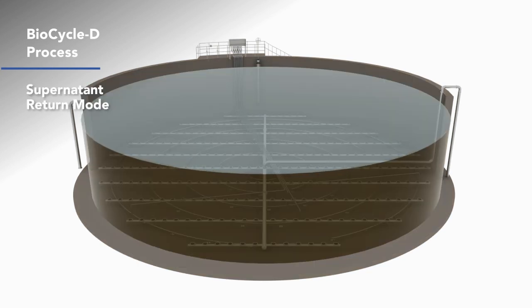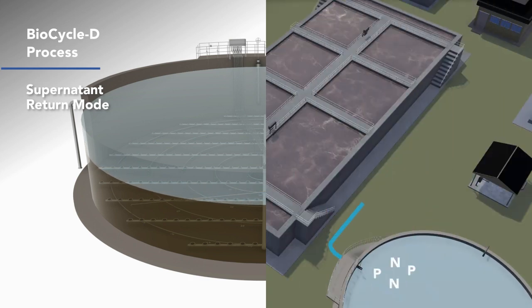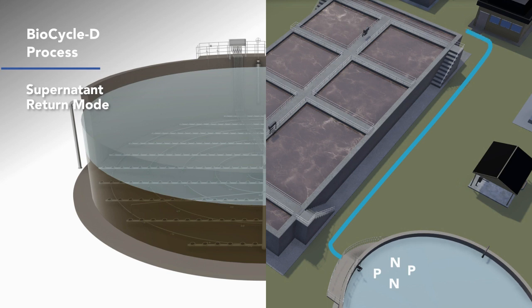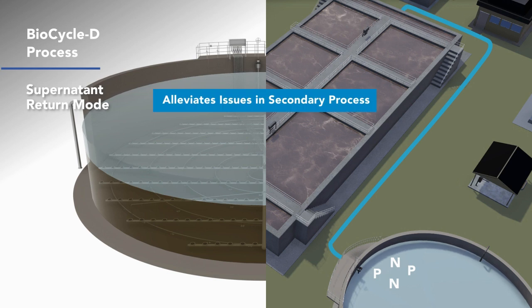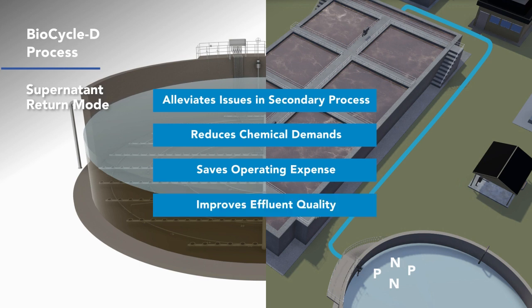When an operator is ready to thicken the sludge and decant, they select the supernatant return mode. The automated controls ensure the nutrients stay in the sludge, which has direct and indirect benefits. Keeping nutrients where they belong alleviates issues in the secondary process, reducing chemical demands, saving operating expense, and ultimately improving effluent quality.